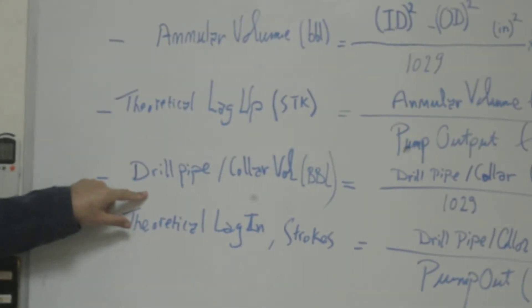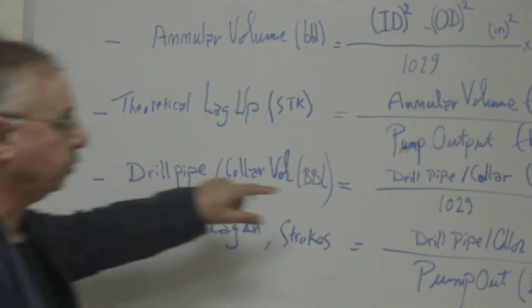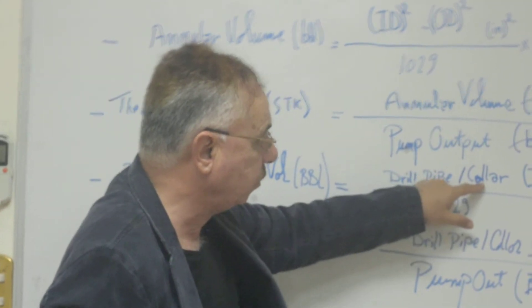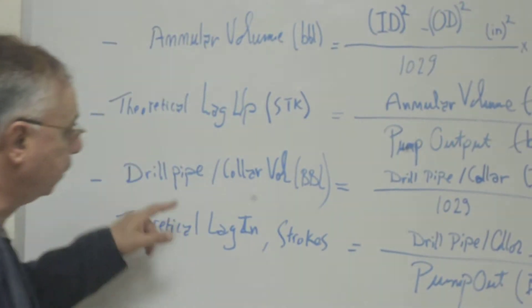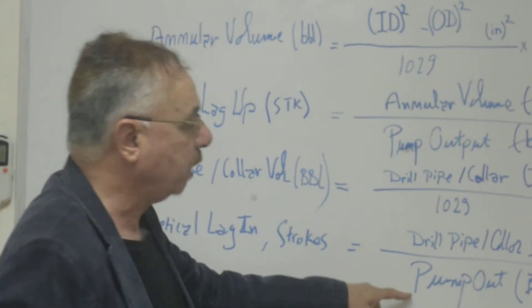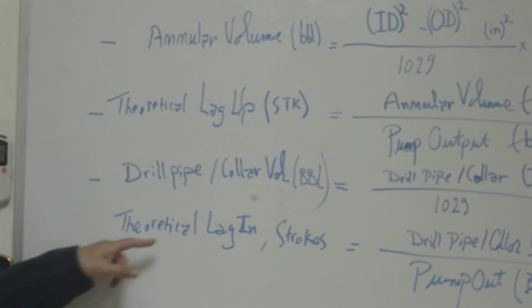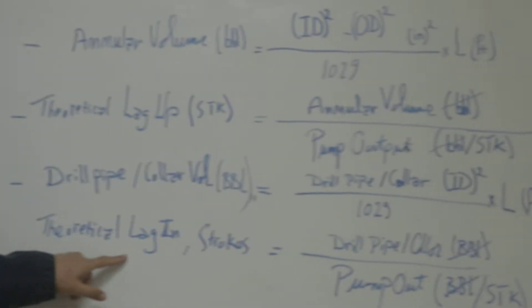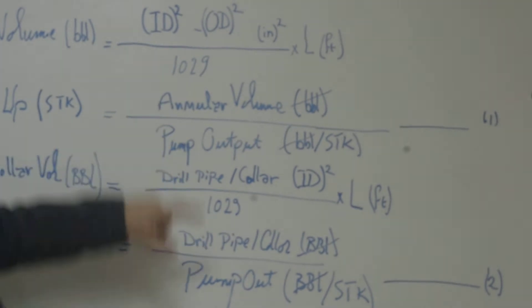Calculate the volume in the drill pipe and drill collar, because they have different dimensions. Then divide this volume by pump output. You will get the theoretical lag up and the theoretical lag in - equations 1 and 2.